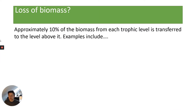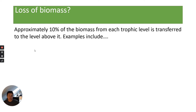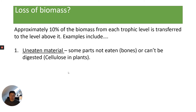Once photosynthesis has occurred and producers have produced biomass, it's going to be eaten by a herbivore. At each trophic level, only approximately 10% of the biomass is transferred to the level above it. There are some good reasons why. Firstly, uneaten material: when a herbivore or carnivore eats something, some parts might not be eaten. For carnivores, they might not eat the bones; for herbivores, they can't digest all parts of the plant — for example, cellulose in the cell wall is very tough and hard to digest.